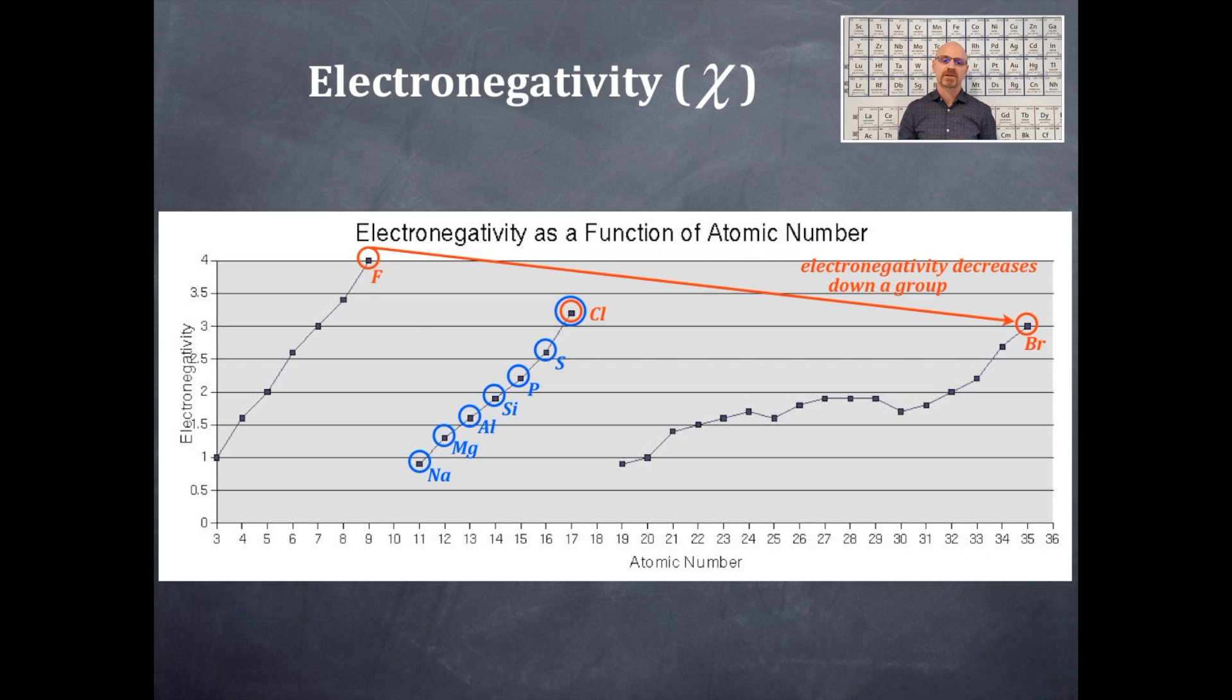Here is a period, this happens to be period three. Look at that right there, and you should see that as you go from left to right, the electronegativity values increase across that period, and you should see the same trend with the other periods as well.